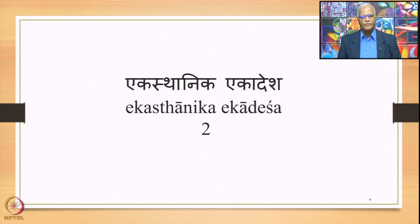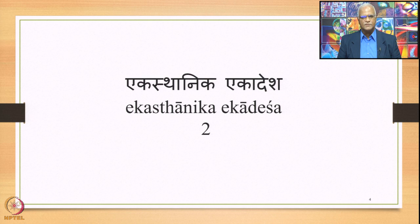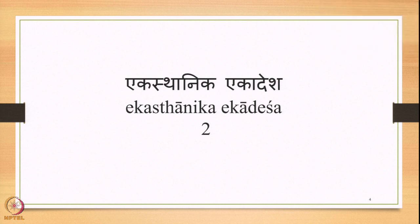We studied the Uddeshya Vidhaya Bhava discussed while interpreting Sutra 6177. We also studied individual examples and the criterion for selection of substitute. We also studied how Ekoyanachi and its output become the input for Swara operations. Then we studied the second instance of Ekasthanika Ekadesha, which is Echoyavayavaha, and some of its examples.